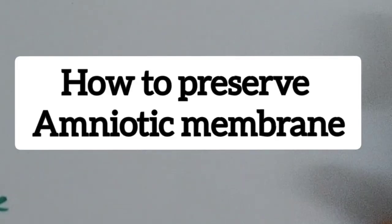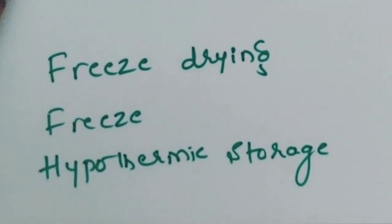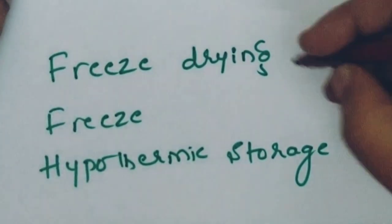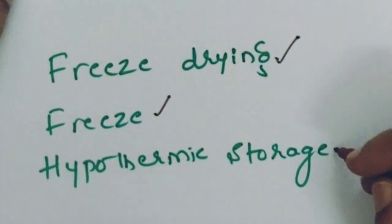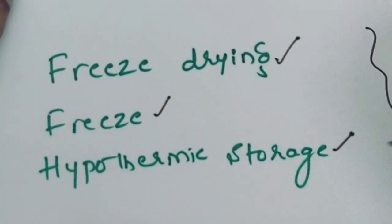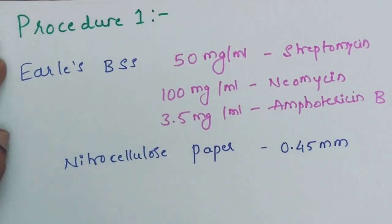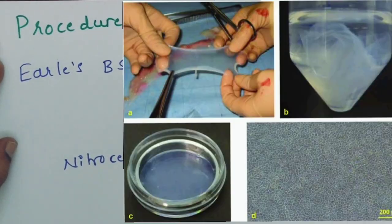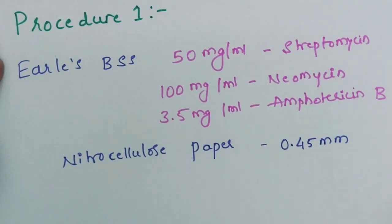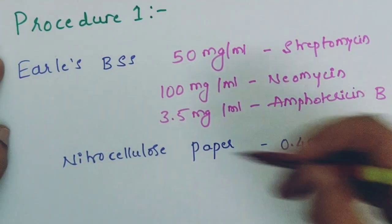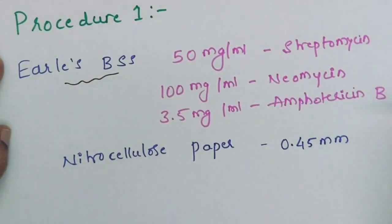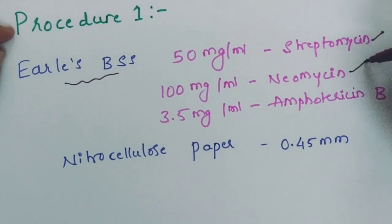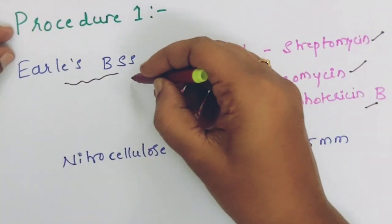Moving on to how we can preserve this amniotic membrane — it is preserved either by freeze drying, by freezing, or by hypothermic storage. These are the 3 methods. In the first procedure, under the laminar flow, the placenta is cleaned of blood clots and a sterile BSS solution is used, containing 50 mg per ml of streptomycin, 100 mg per ml of neomycin, and 3.5 mg per ml of amphotericin B. The membrane is washed with this solution.